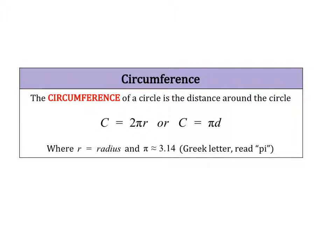Now let's talk about a specific measurement within a circle called the circumference. The circumference is the distance around the outside of the circle — imagine tracing a string around your circle and measuring that distance. The formula is C equals 2 times pi times R, where R is the radius. Pi is a Greek letter representing roughly 3.14 — your calculator has a pi button, but we can use 3.14 as a decimal approximation. Since 2 times R equals the diameter, we can also write C equals pi times D.